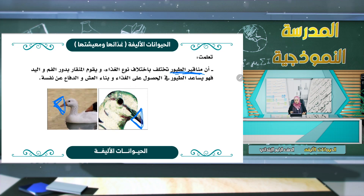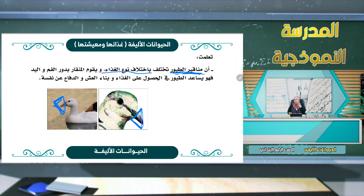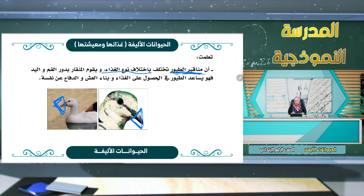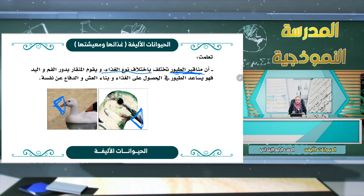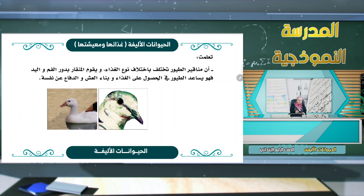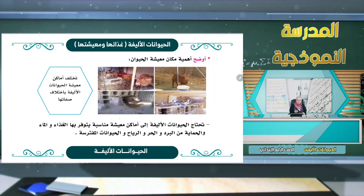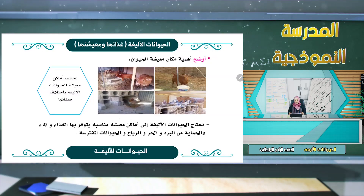يقوم المنقار بدور الفم واليد، ويساعد الطيور في الحصول على الغذاء وبناء العش والدفاع عن نفسها. إذن وظائف المنقار ثلاث: أولاً الحصول على الغذاء، ثانياً بناء العش، ثالثاً الدفاع عن النفس. والآن سوف نتعرف على أهمية مكان معيشة الحيوان.